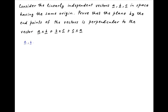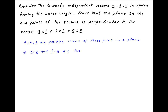We are given that A, B and C are the position vectors of three points in a plane. Therefore, vectors A-B and B-C are two vectors that lie along the lines that join these points in this plane. Therefore, the cross product of these two vectors A-B cross B-C is a vector that is perpendicular to this plane.